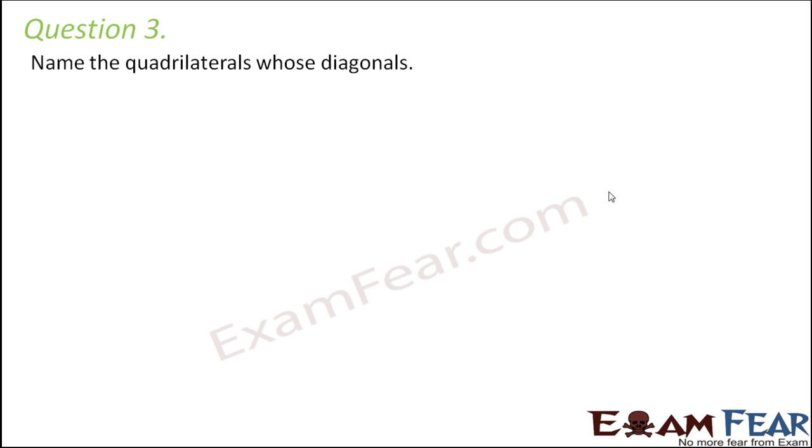Question number three: Name the quadrilaterals whose diagonals bisect each other. Now there are many such quadrilaterals. One such quadrilateral is a parallelogram. So in parallelogram the diagonals bisect each other.